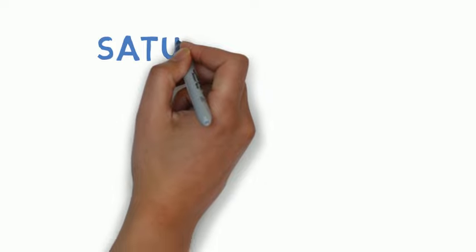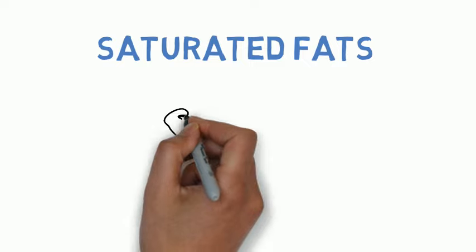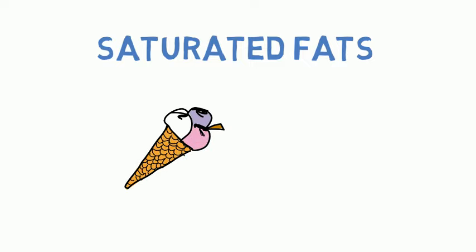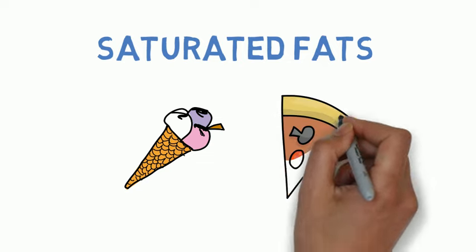Saturated fats are usually solid. Eating too much of these may increase the risk of heart disease. Saturated fat is in whole milk, butter, cheese, and ice cream. It is also in fatty meats, like bacon and sausage.